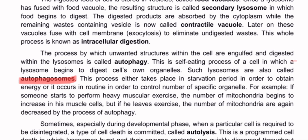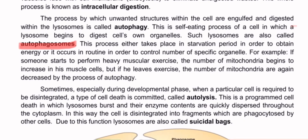For example, if someone starts to perform heavy muscular exercises, the number of mitochondria begins to increase in his muscle cells. If he leaves the exercise, the number of mitochondria will decrease in his muscle cells.